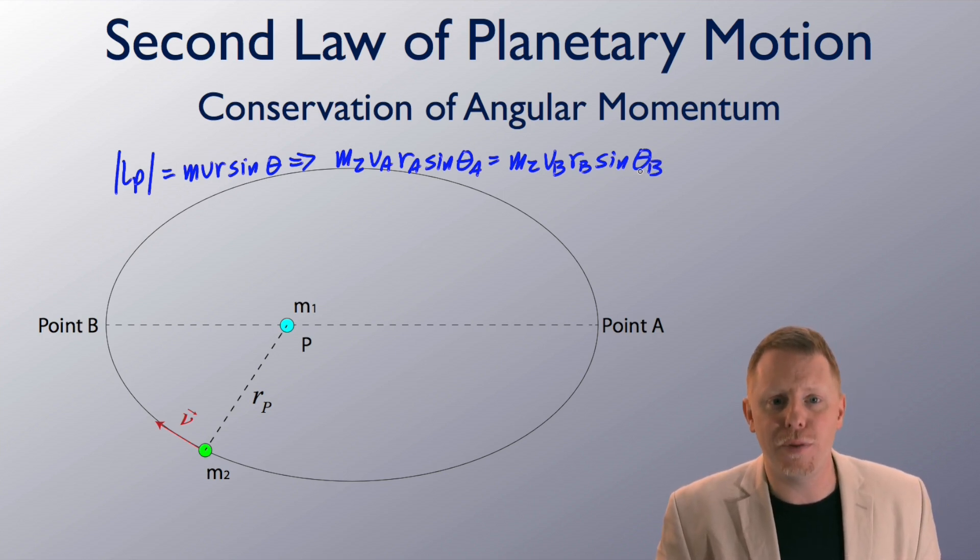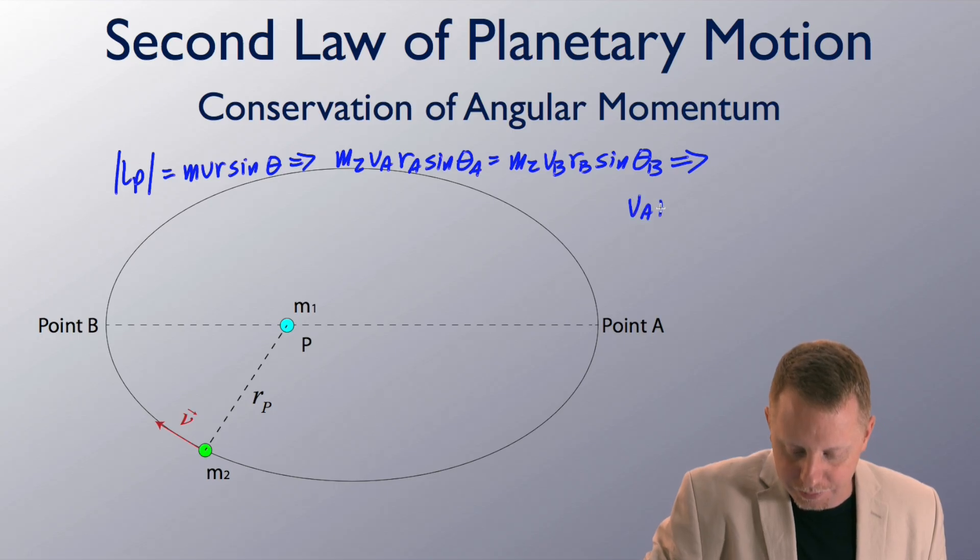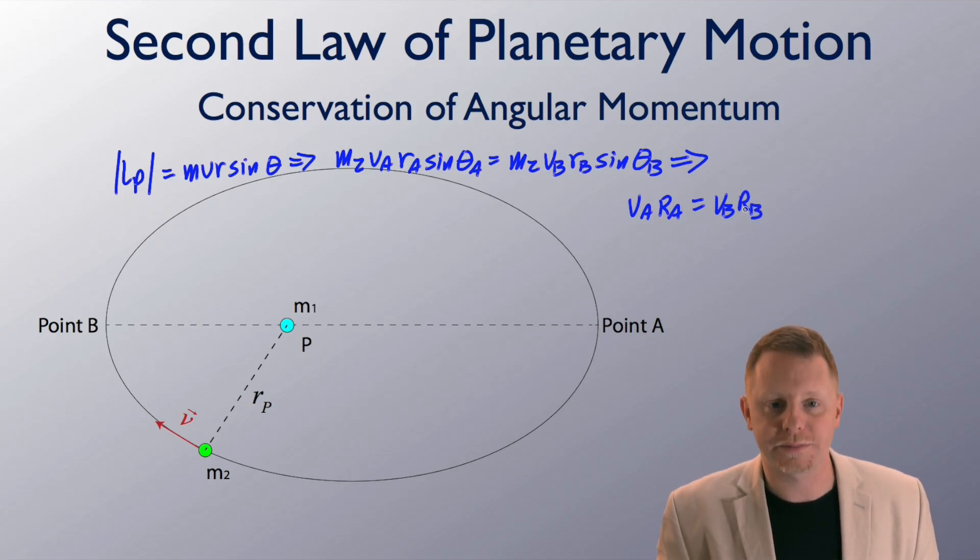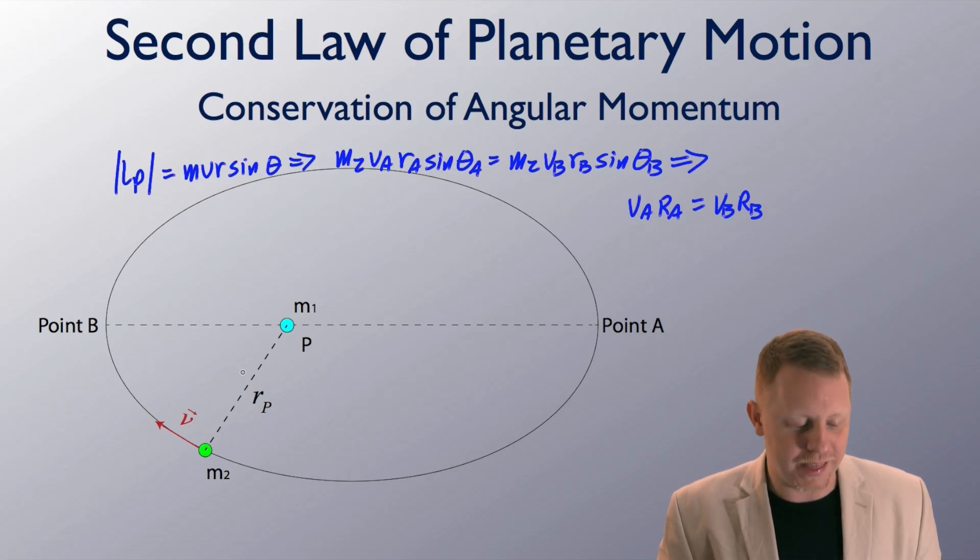Now, at those two points, theta a, theta b are both 90 degrees. So, sine theta a, sine theta b are both 1. We can also recognize we've got mass 2 in both sides of our equation, and rewrite this to say that va r a equals v b r b. As you get closer to that object, you're going faster. All right, so that's Kepler's second law of planetary motion.